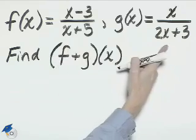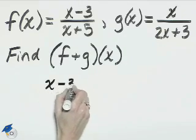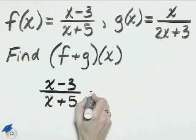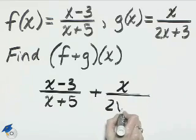We're just going to be adding these two functions. So we'll need x minus 3 over x plus 5 plus x over 2x plus 3.